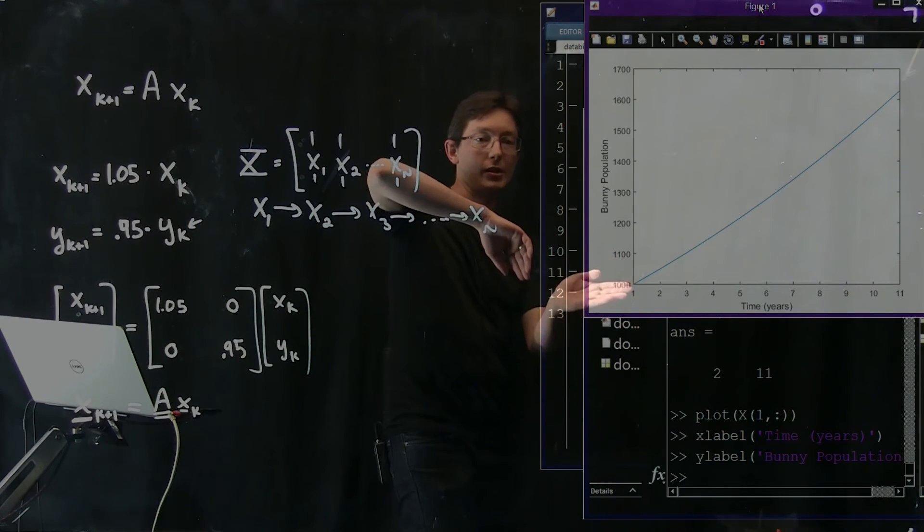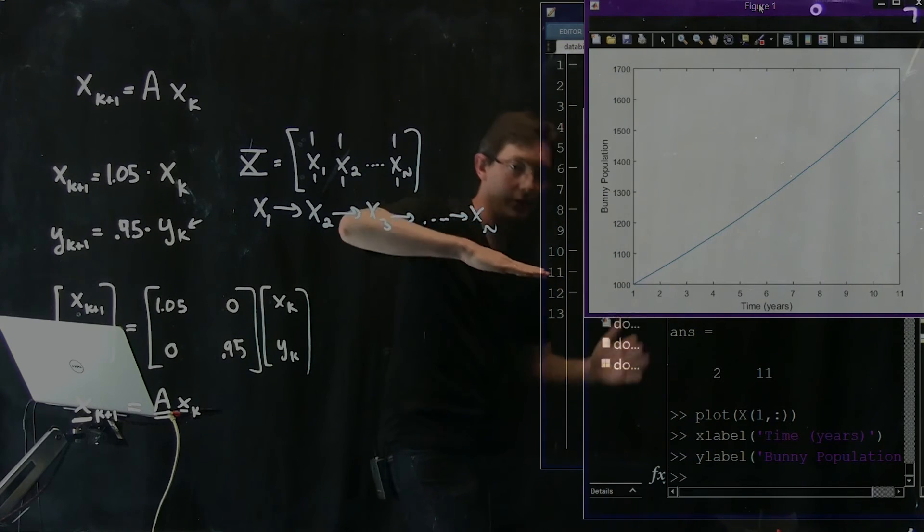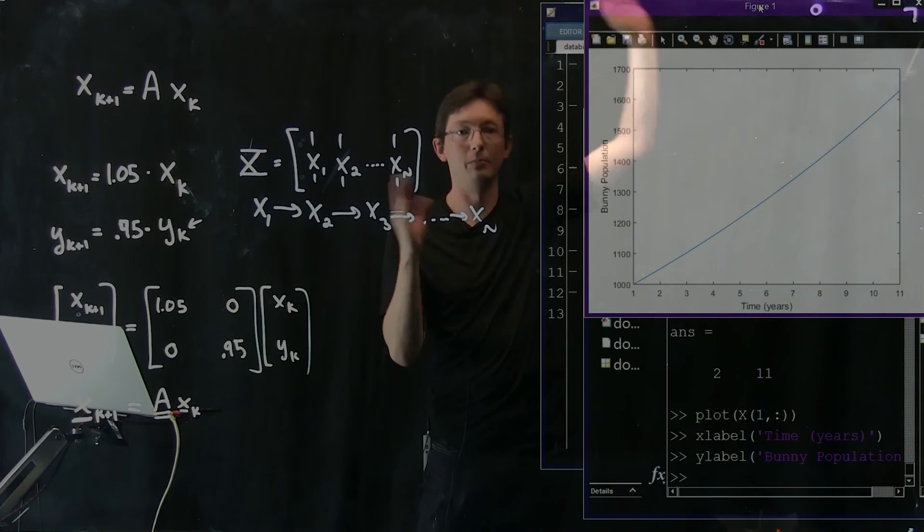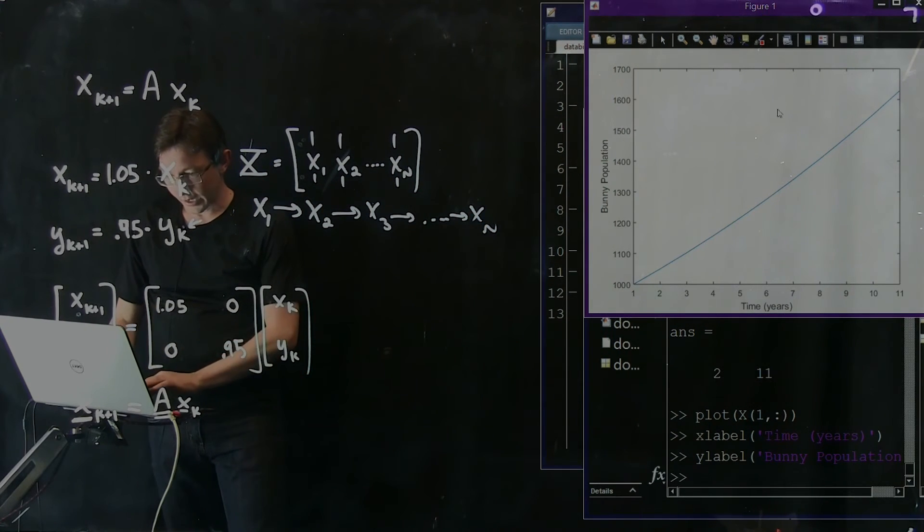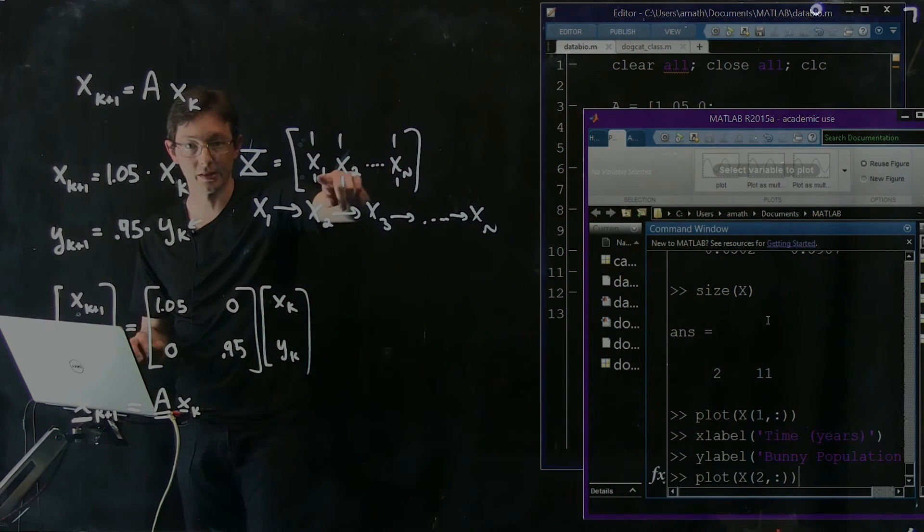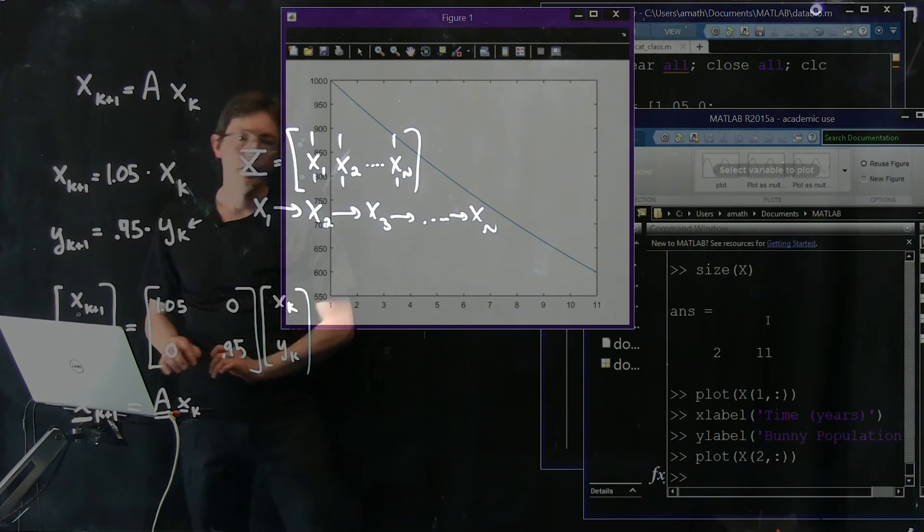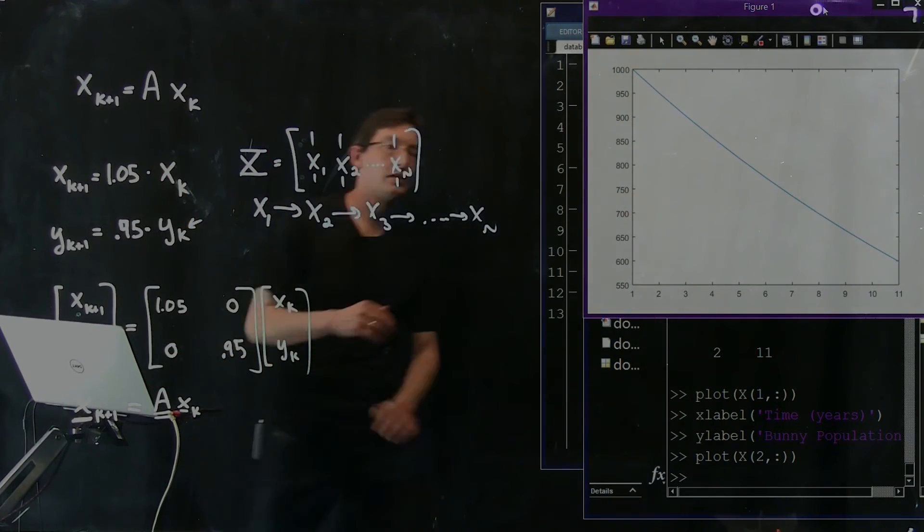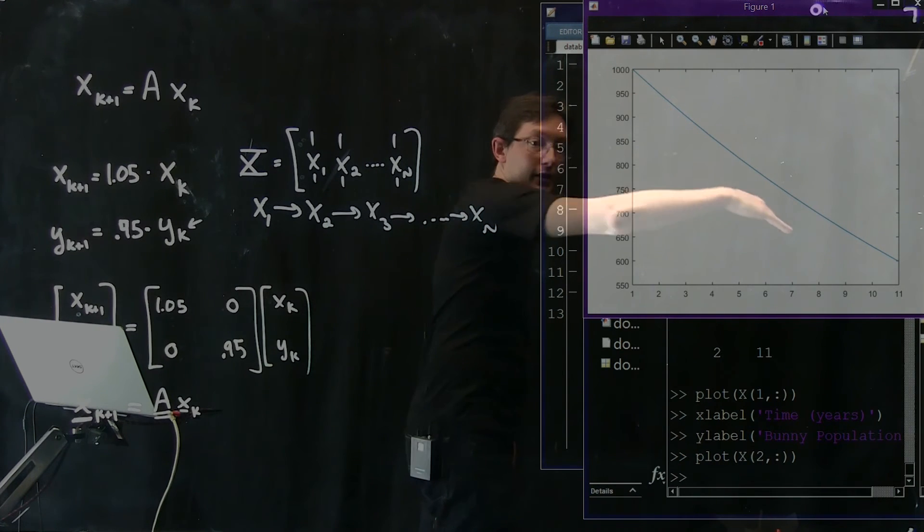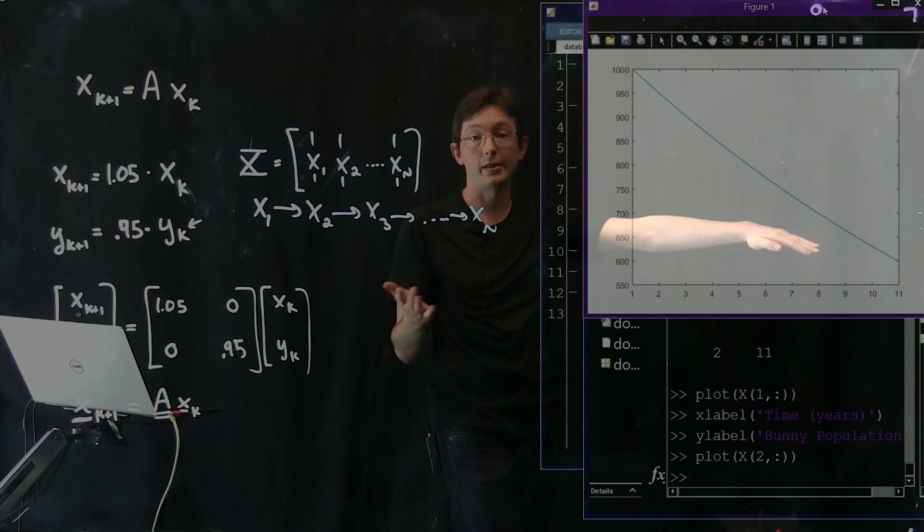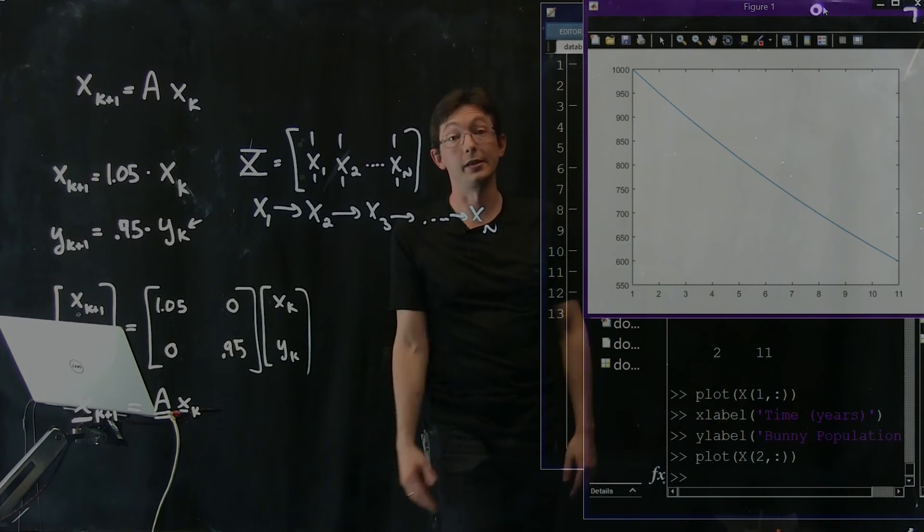So the bunny population is increasing in time, and if you plotted this for longer, you'd see that it's increasing exponentially. It's really going to pick up, and eventually it'll blow up. Now, unfortunately, the bears are in a different situation. So if we plot the second row of this big X matrix that's storing all of my information, then we find that sadly the bear population is in slow decline. So it goes from 1,000 all the way down to just under 600. And it's just going to keep dropping also exponentially until eventually it goes to zero.